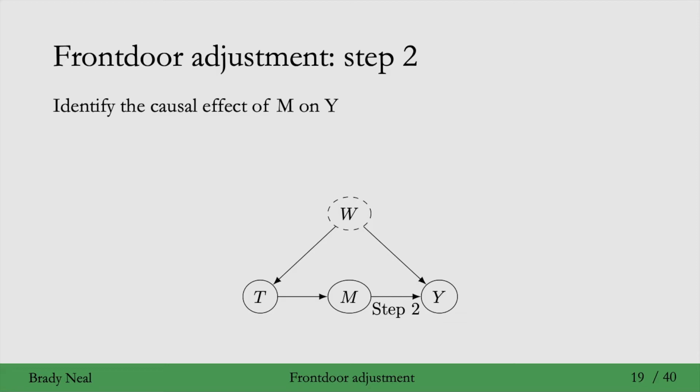In step two, we want to identify the causal effect of M on Y. So the causal quantity of interest is P of Y given do M. Here, there is a backdoor path from M to Y. The backdoor path is M to T to W to Y. But fortunately, we can block that backdoor path by conditioning on T. So we can use T as a sufficient adjustment set and just use the backdoor adjustment here.